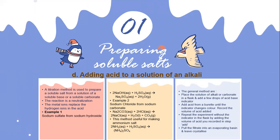The equation for the ammonium salt example is: 2NH3 + H2SO4 → (NH4)2SO4. The general method requires you to place the solution of alkali or carbonate in a flask.